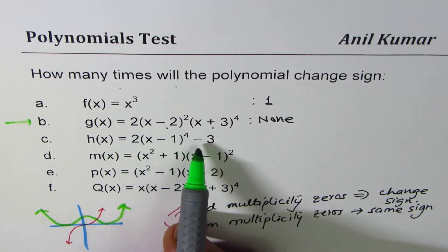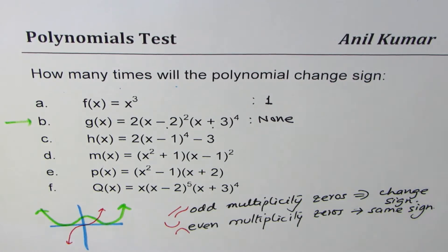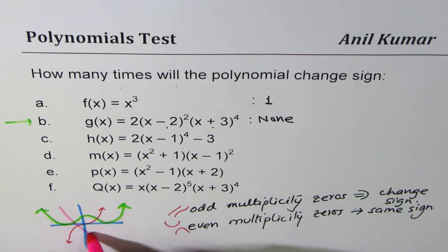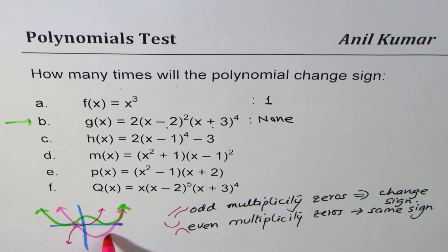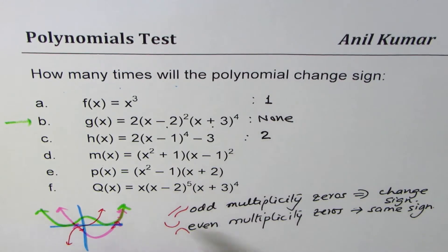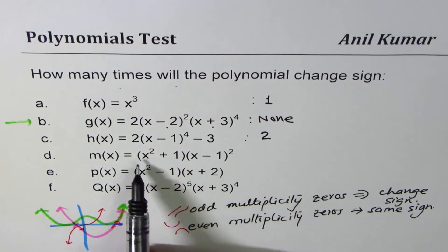Now in that case, 2 times (x - 1)⁴ - 3. Now here we have vertex at (1, -3) so the function will be kind of like this. Since it has moved three units down it leads to two linear zeros, and therefore it changes sign twice. Once it comes from positive to negative, and then from negative to positive. So these are the two times when it changes sign. For c it is two times.